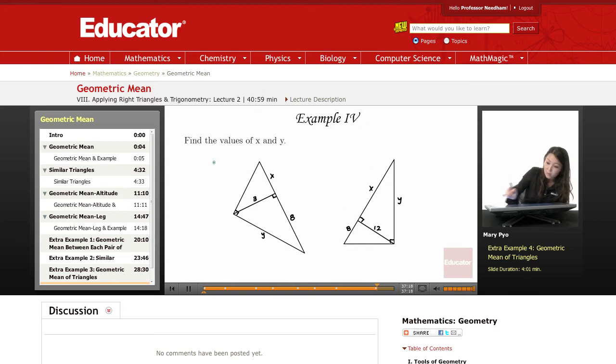So then the geometric mean is going to go here and here between these two numbers, x and 8. So 8x equals 9, x is equal to 9 over 8.